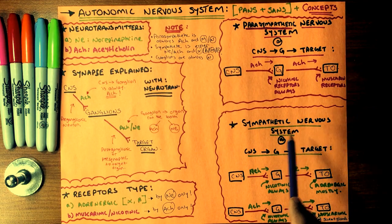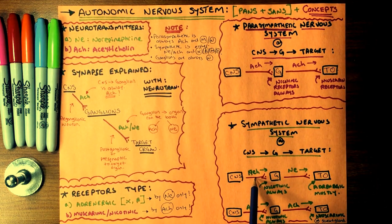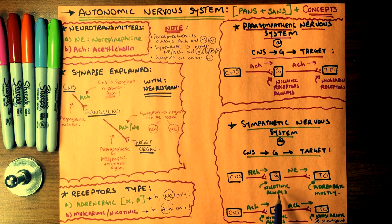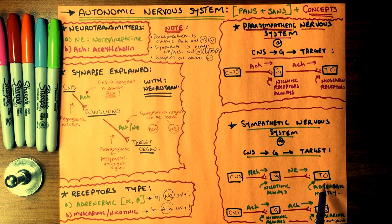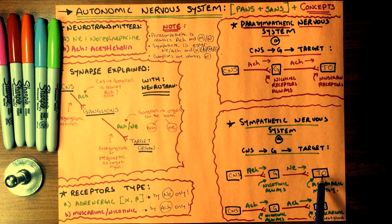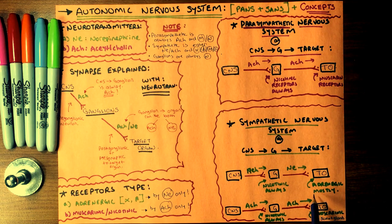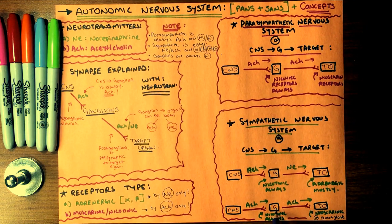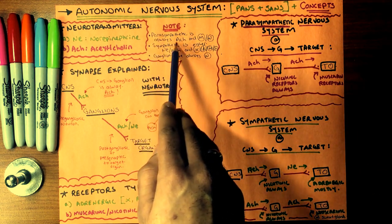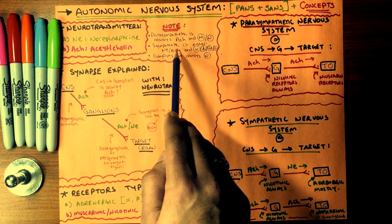In the sympathetic nervous system, the central nervous system releases a message via acetylcholine to the ganglion through the preganglionic neuron. Again, nicotinic receptors always receive it at the ganglion. Then a message is sent through the postganglionic neuron to the target organs using norepinephrine. The target organs receive it via adrenergic receptors in most cases. However, the pathway from the central nervous system to the ganglion to target organs using muscarinic receptors in the sympathetic system occurs at sweat glands only. Note: parasympathetic is always acetylcholine; sympathetic could be norepinephrine or acetylcholine.